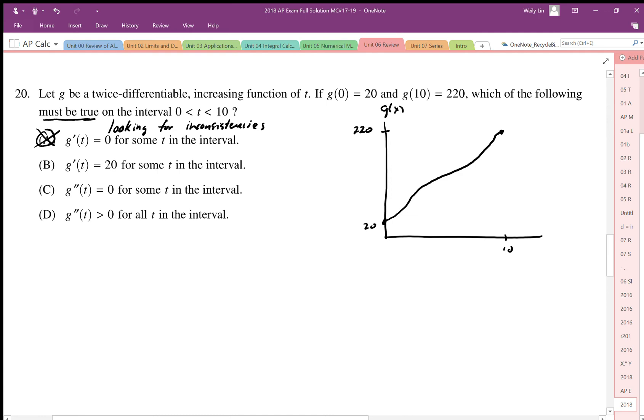B is g prime equals 20 for some t in the interval. What this is actually alluding to is the mean value theorem. This is differentiable, therefore smooth and continuous, so we can apply mean value theorem.